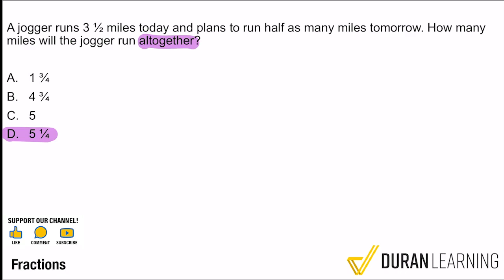So the only question is, what are we adding up? Again, all together, that means add. And so I've got to ask myself, what am I adding? Well, it says that he runs three and a half miles today and he runs half as many as that tomorrow. How many is he running all together? So we got three and a half miles plus half of that. So half of three and a half. And then we're good. If we add those two together, we're good.